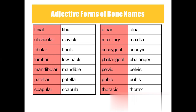Tibial means tibia, which is a leg bone. Clavicula means clavicle, which is a bone of the pectoral girdle. Fibular means fibula, which is a leg bone. Lumbar is the lower back. Mandibular means mandible, the lower jaw bone. Patellar is the patella, the kneecap — near the knee we have a ball-like bone that we call the patella.